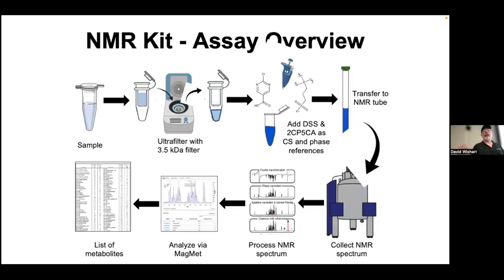For the NMR kit, typically you have your sample—urine, blood, or serum. For serum, we do ultrafiltration to remove proteins. We add a couple of compounds from the kit: one used as a phase reference, another as a chemical shift reference. We put them into an NMR tube, collect the NMR spectrum, process it using software called MagMet, and it produces a list of metabolites and their concentrations. You'll focus on the last three steps—the sample preparation has been done for you.